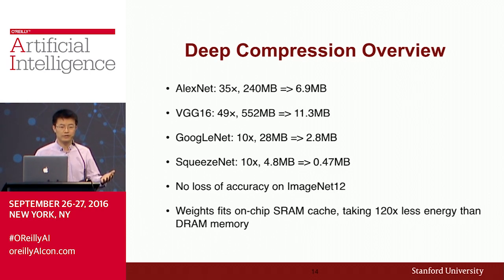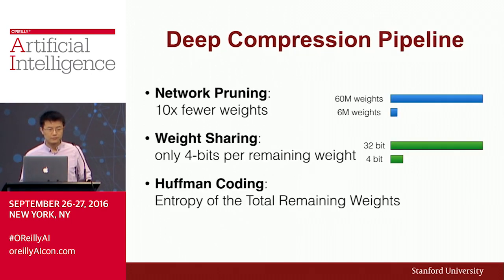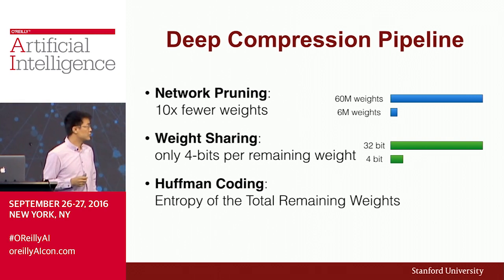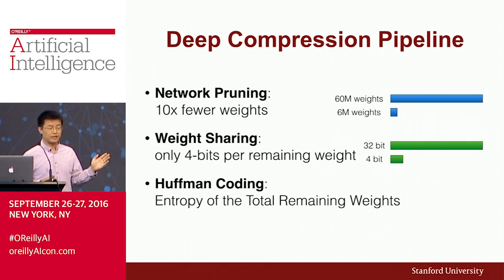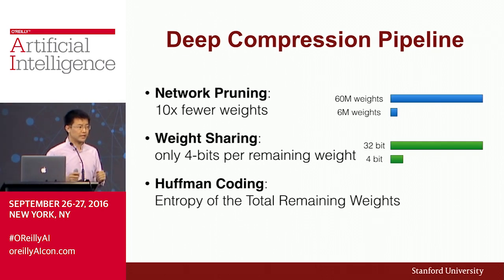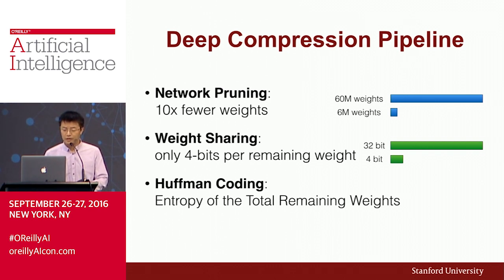This gives the potential of fitting the neural network model on SRAM chip locally in the cache, instead of having to go to DRAM memory. The pipeline has three steps: first, network pruning, so the network has fewer parameters; second, weight sharing, so remaining parameters use fewer bits; and third, Huffman coding, so the remaining weights are approximated with their real entropy.